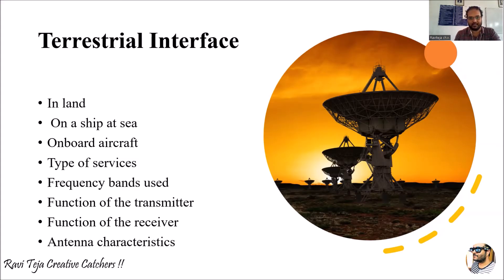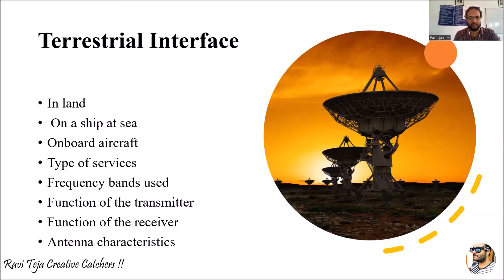These earth stations — mostly what we are considering — are antennas located at several terrestrial areas or bodies, used to communicate with the satellite. That antenna or earth station can be on a ship, on an aircraft, or on land. Along with this, the frequency bands used, how the transmitter and receiver are functioning, and the antenna characteristics for reception and transmission all affect the terrestrial interface and signal quality.